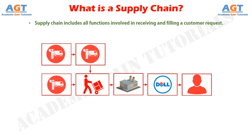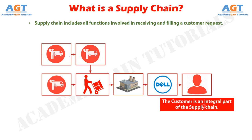The customer may later return to the website to check the status of the order. Stages further up the supply chain use customer order information to fill the request. That process involves an additional flow of information, product, and funds among various stages of the supply chain. These examples illustrate that the customer is an integral part of the supply chain. In fact, the primary purpose of any supply chain is to satisfy customer needs and, in the process, generate profit for itself.